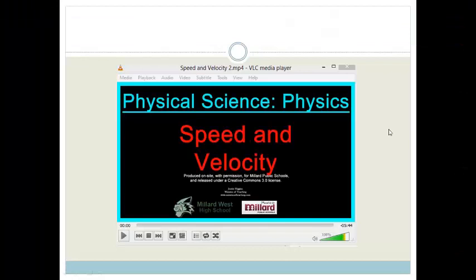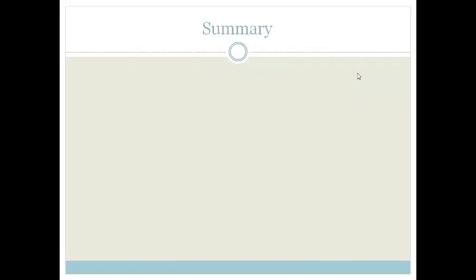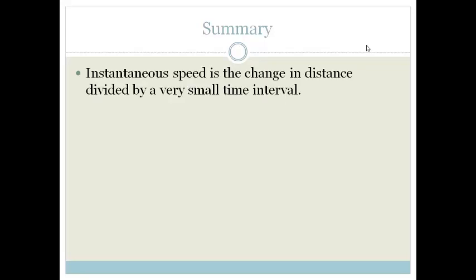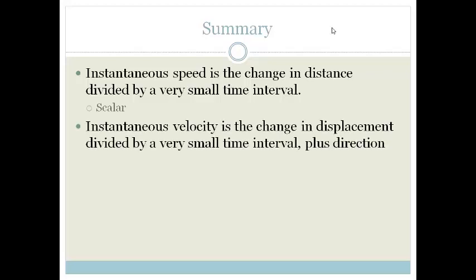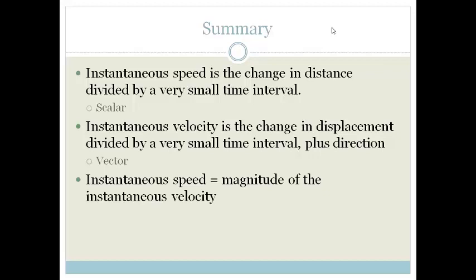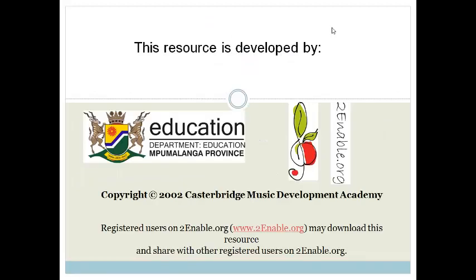So far, we've spoken about speed and velocity, and about instantaneous and average speed and velocity. The whole video was talking about something traveling at a constant rate in one direction. Instantaneous speed is a change in distance divided by a very small time interval, and it is a scalar quantity. Instantaneous velocity is a change in displacement divided by a very small time interval plus a direction, making it a vector. Instantaneous speed is therefore the magnitude of the instantaneous velocity. Thank you, grade 10s — we will continue in the next few lessons.